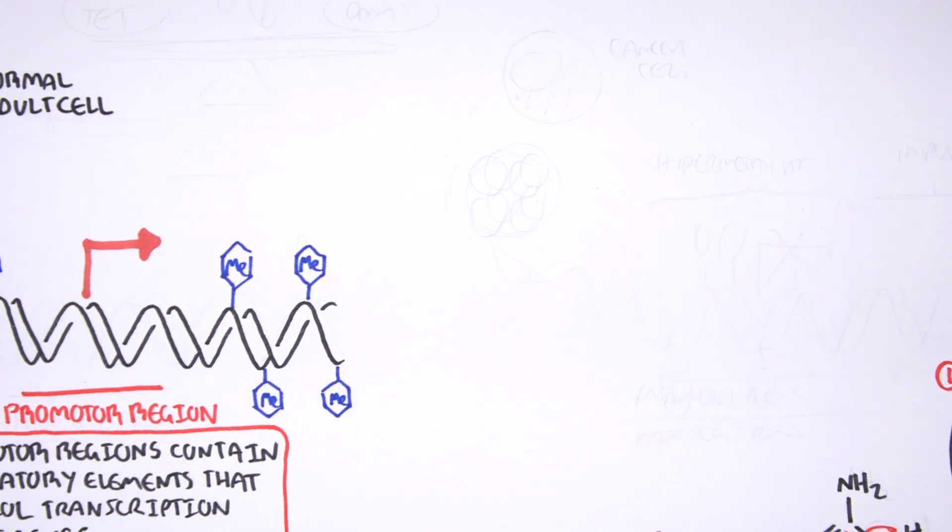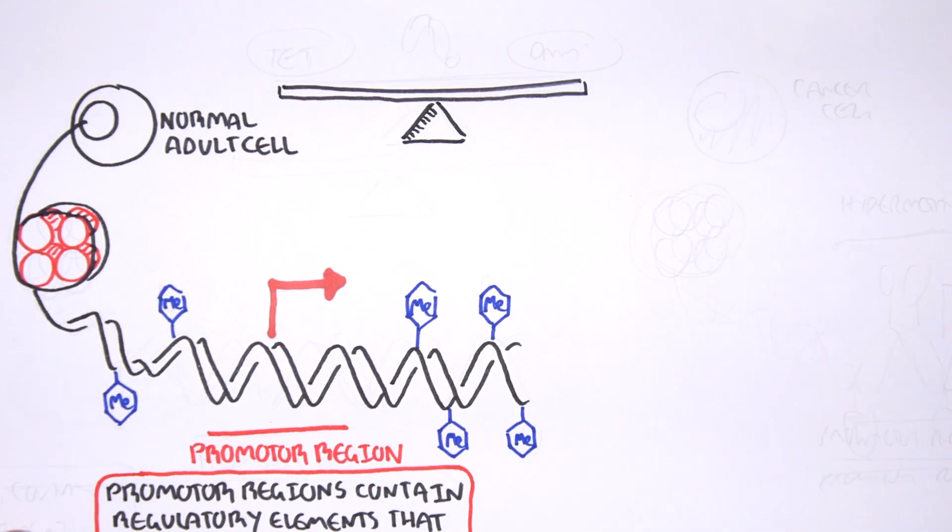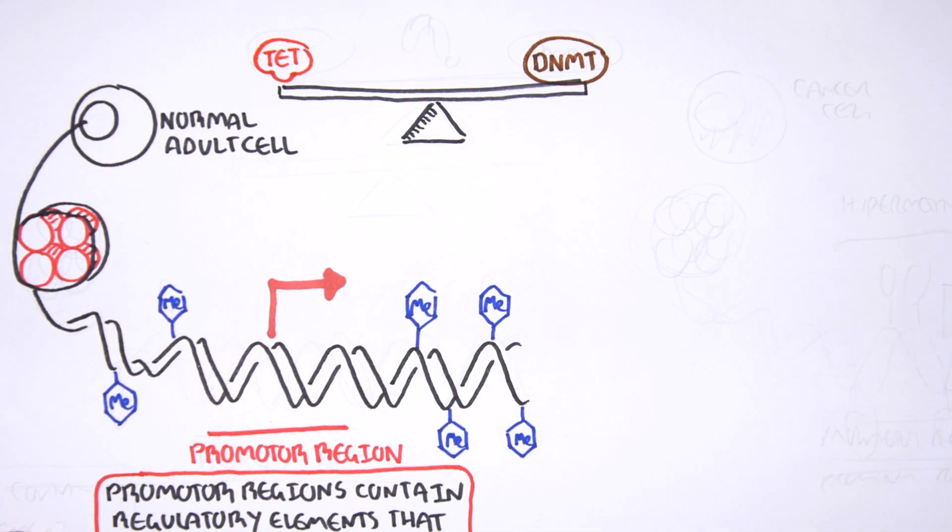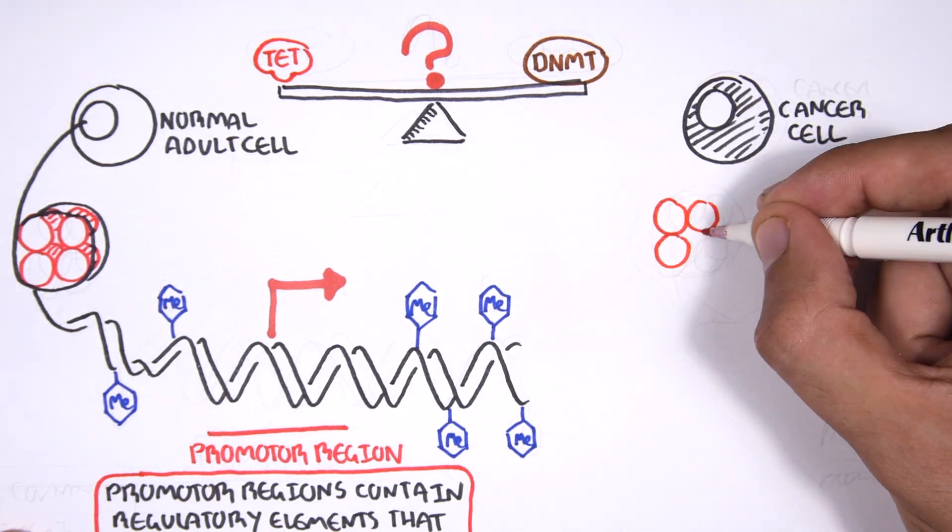In a normal cell, the two opposing processes of methylation and demethylation are tightly regulated in development. However, in cancer, this balance is potentially disrupted, and as a consequence, DNA methylation patterns change.